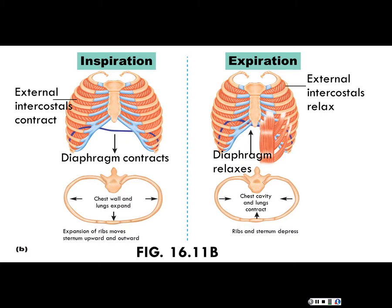By contrast, during expiration, the diaphragm relaxes and the intercostals cause the ribcage to depress. Volume decreases, squeezing the air — pressure goes up higher than atmospheric pressure — so air moves out of the lungs down its pressure gradient.